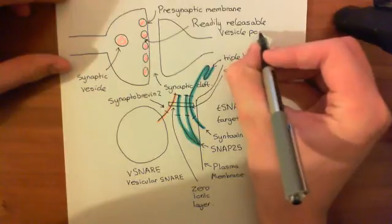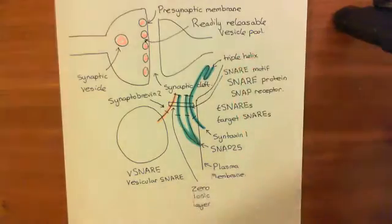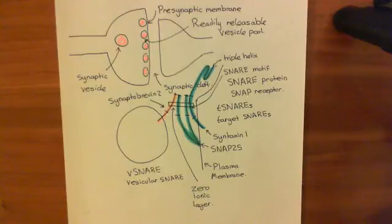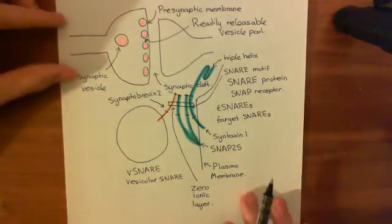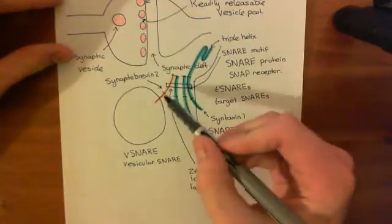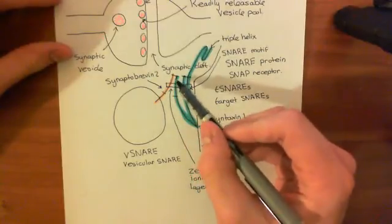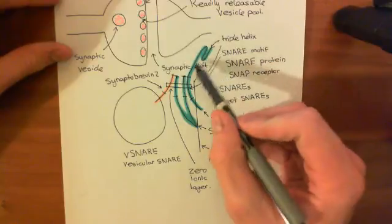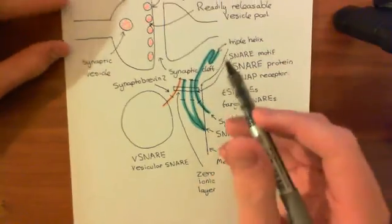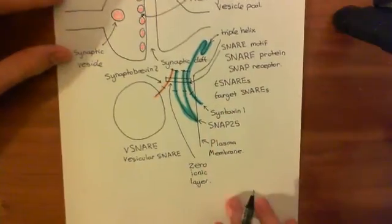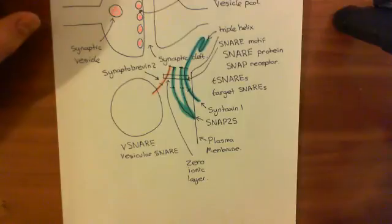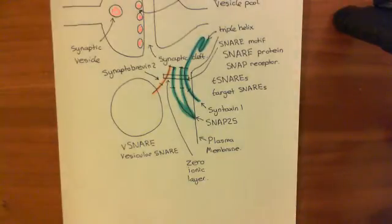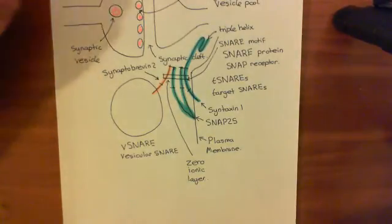We then started to look at the structures underlying this docking complex, the SNARE complex as it's called, which are these SNARE proteins. We've seen so far synaptobrevin 2 in orange, SNAP25 in turquoise, and syntaxin 1 in blue. Now what we want to look at is the interactions that hold this core SNARE complex together.